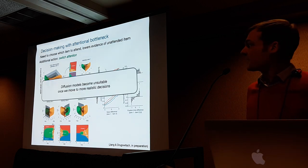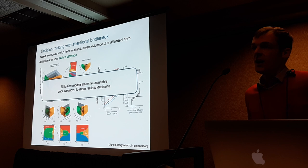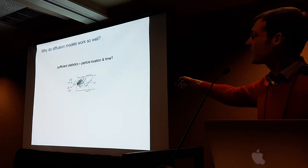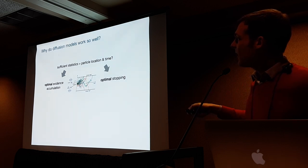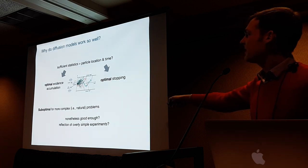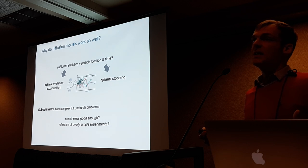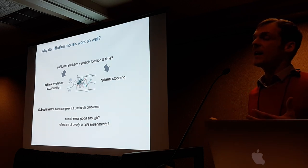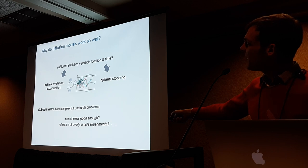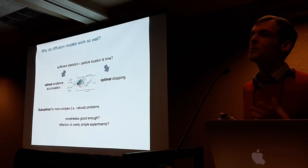The bottom line of these three examples is that diffusion models actually become unsuitable in the optimal sense once we move to more realistic decisions. To come back to the original question — why do diffusion models still work so well? When sufficient statistics are particle location and time, they perform optimal evidence accumulation and optimal stopping. But they become suboptimal for many — and I would argue most — natural tasks.